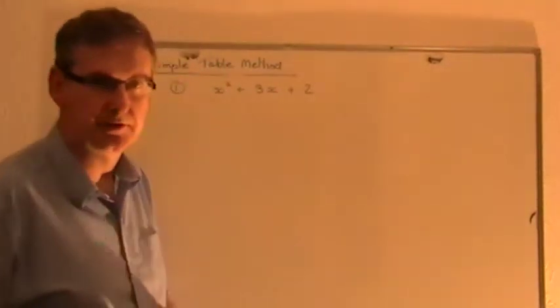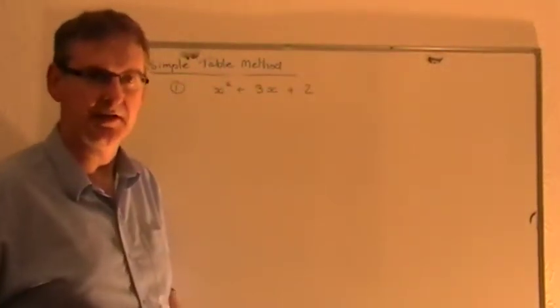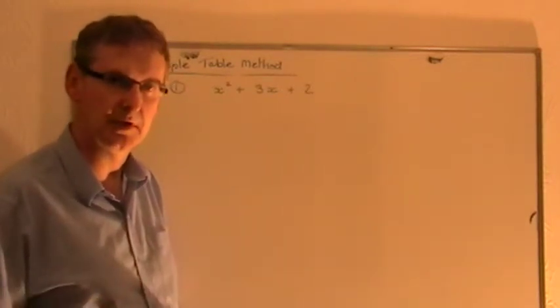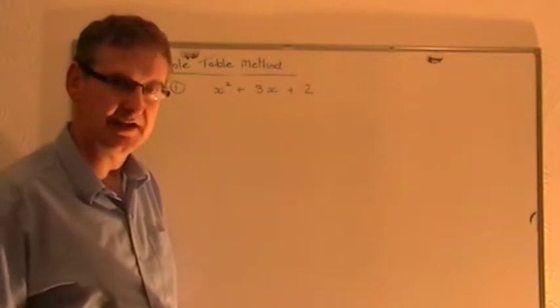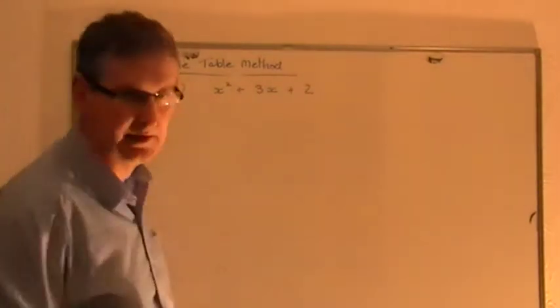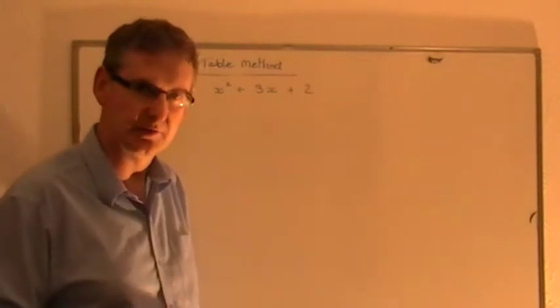Okay, let's have a look at the third of the factorization techniques that you need to know about. We've done common factor, we've done difference of two squares. This now is known as the table method, when we have one x squared at the beginning of the quadratic expression.